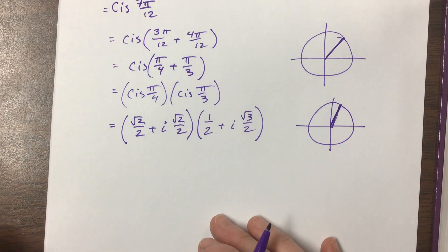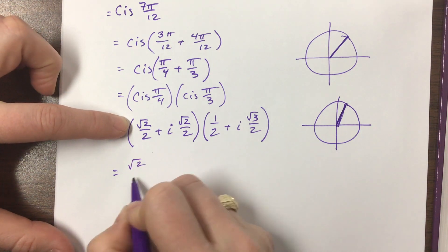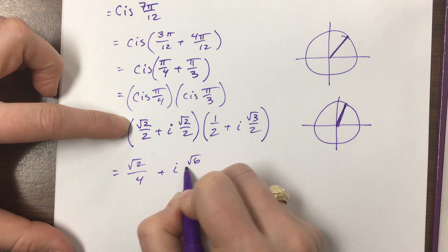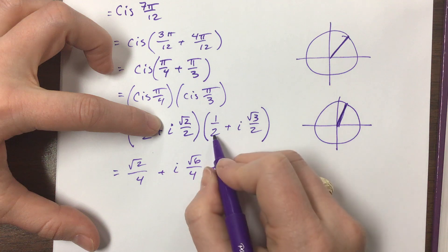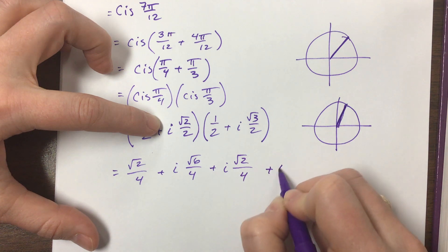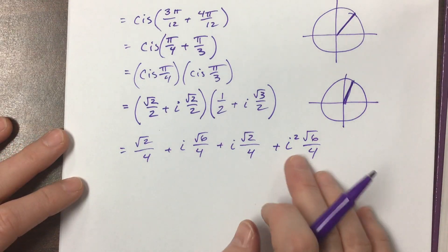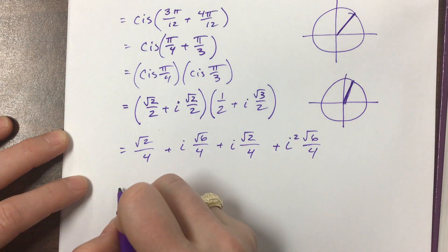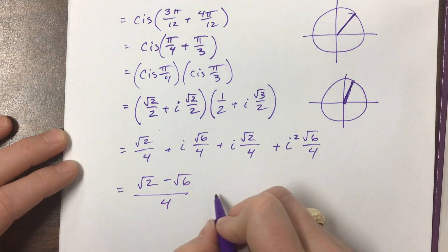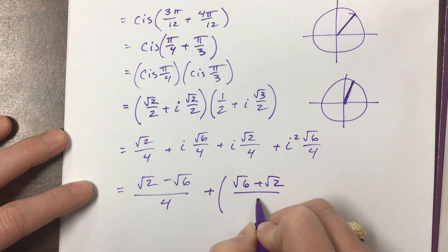Now I'm going to FOIL. This gives us √2/4 plus i√6/4, then plus i√2/4, and then plus i²·√6/4. That's a bit messy — i² becomes −1, so the real part becomes √2/4 − √6/4, which is (√2 − √6)/4.